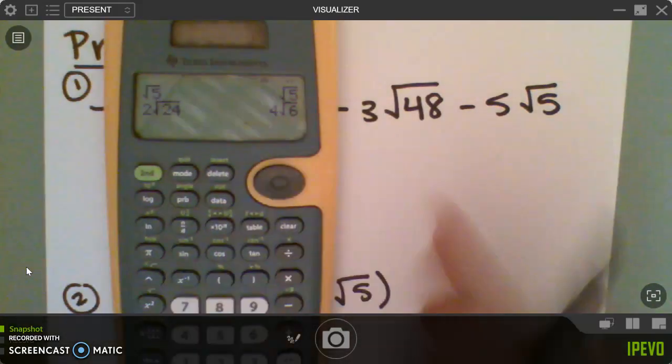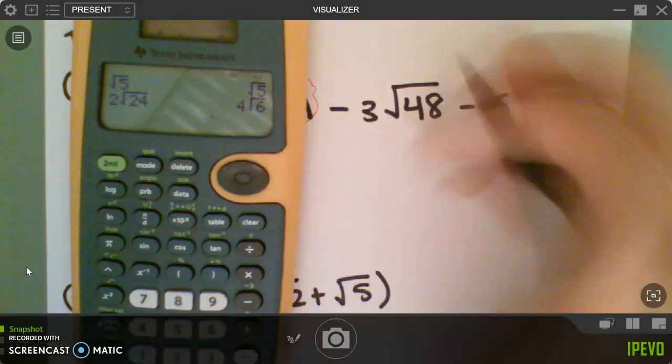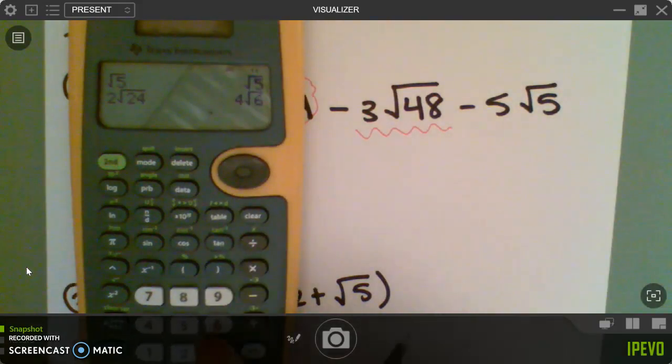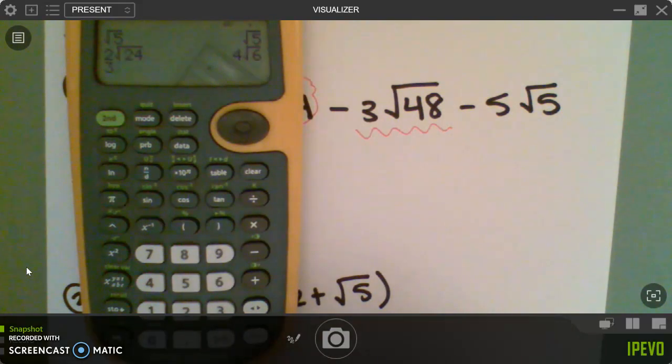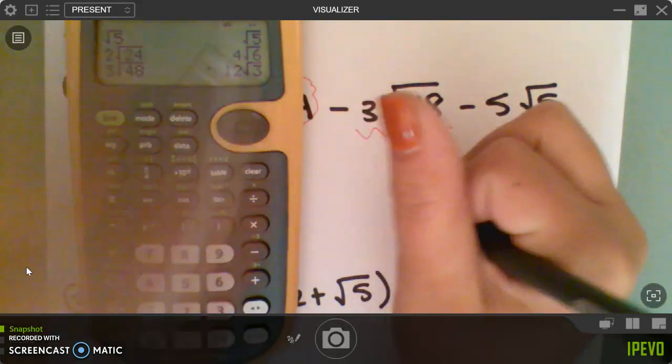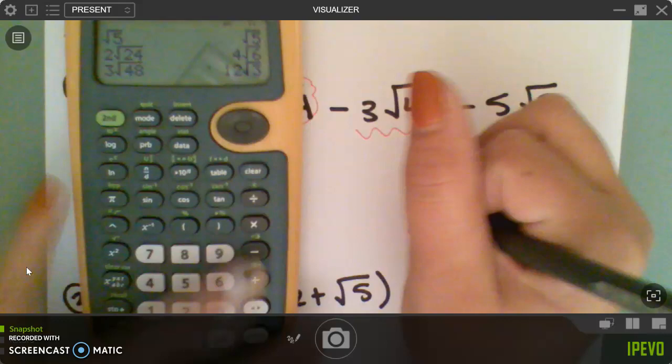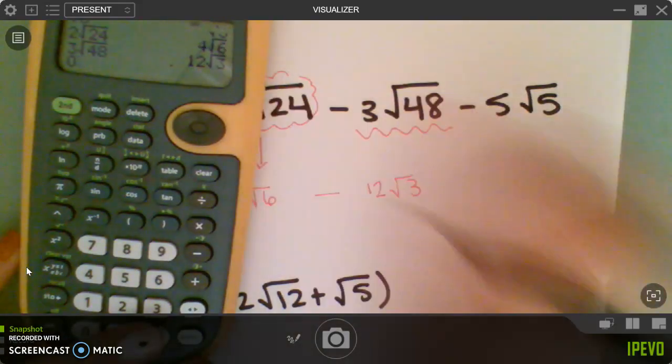Okay, let's do the next piece. So the next piece is minus 3 root 48. So first I'm going to type my 3, second, x squared, 48, enter. So 3 root 48 actually becomes 12 root 3. So 12 square root of 3, and then don't forget to bring down your minus sign.